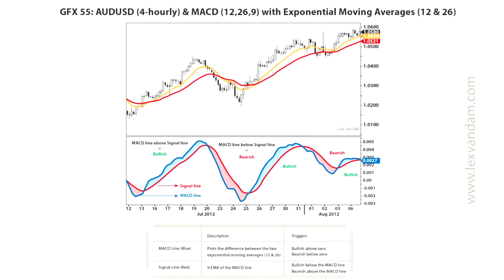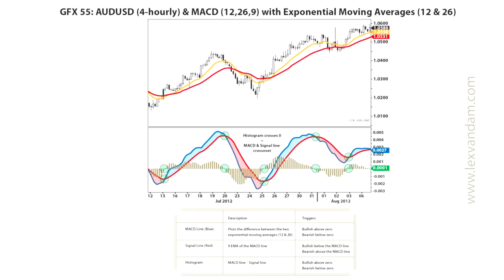When the MACD line is above the signal line, i.e., above its own moving average, it is bullish and you might want to go long. And if the MACD line crosses below the signal line, it is bearish and you might want to go short. Finally, the histogram shows the difference between the signal and MACD lines. So when the histogram crosses zero, the two lines have crossed each other, which was a potential buy or sell signal. The histogram makes it easier to see exactly when the signal happens, as sometimes the MACD and signal line move very closely.